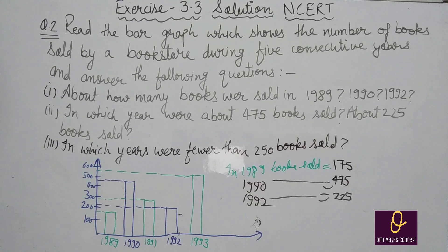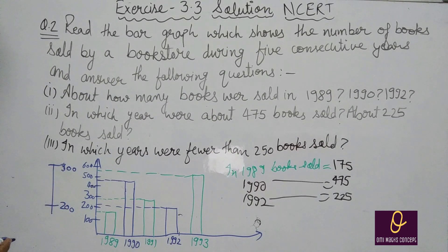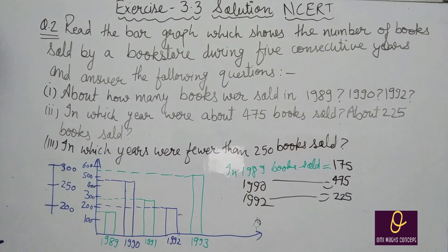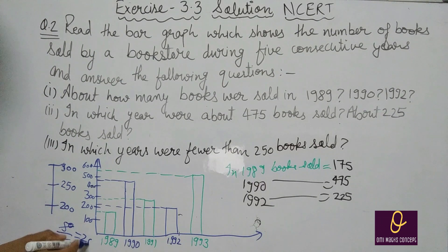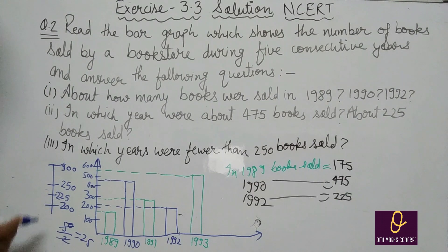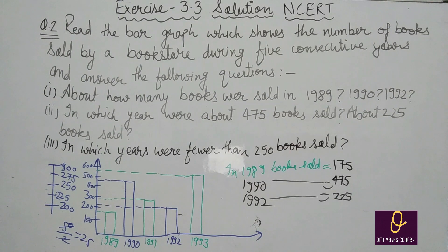इसके 4 parts देखो. मान लो यहाँ 200 है और यहाँ 400 है — यह 300 है. एक part किया, इसका half किया. 200 और 300 का half 250. 200 और 250 का difference 50, उसको 2 से divide किया तो 25. यानि 200 के बाद 225 आएगा. इसी तरह: 100 से शुरू, थोड़ा जादा 125, half पर 150, more than half 175, exact 200.